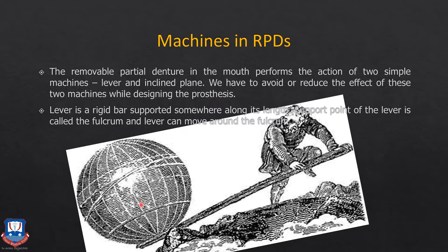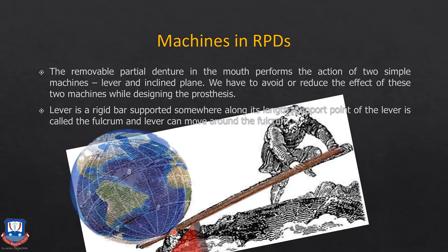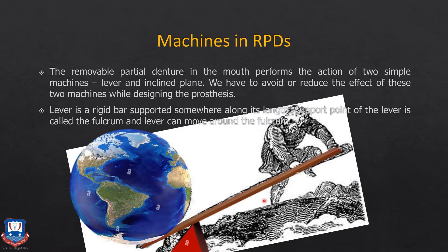A lever is a simple rigid bar supported somewhere along its length, and this support point is called the fulcrum. As Archimedes once said, 'Give me a lever long enough and I will lift the earth.' This long beam acts as a lever, and anywhere it takes support from a wedge or sharp object is known as a fulcrum.